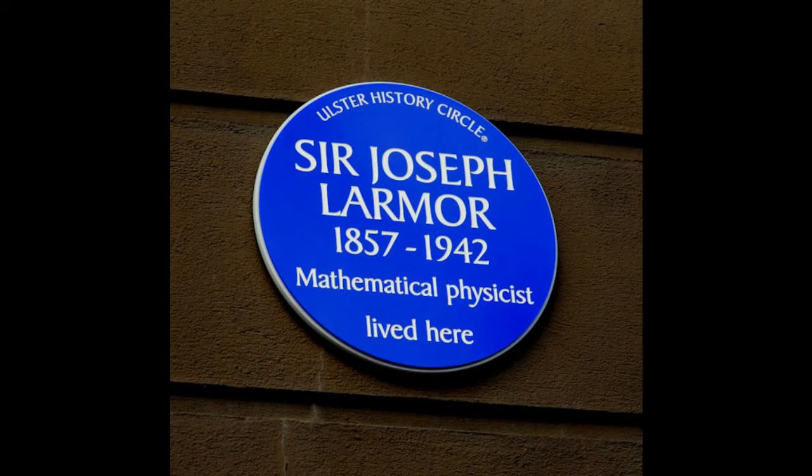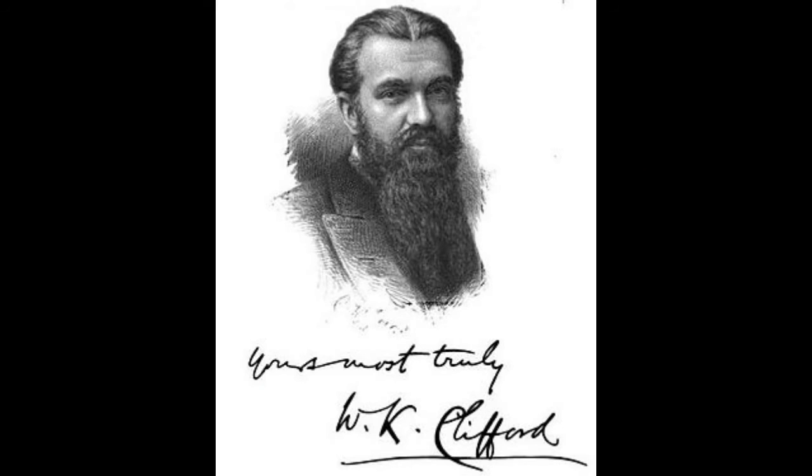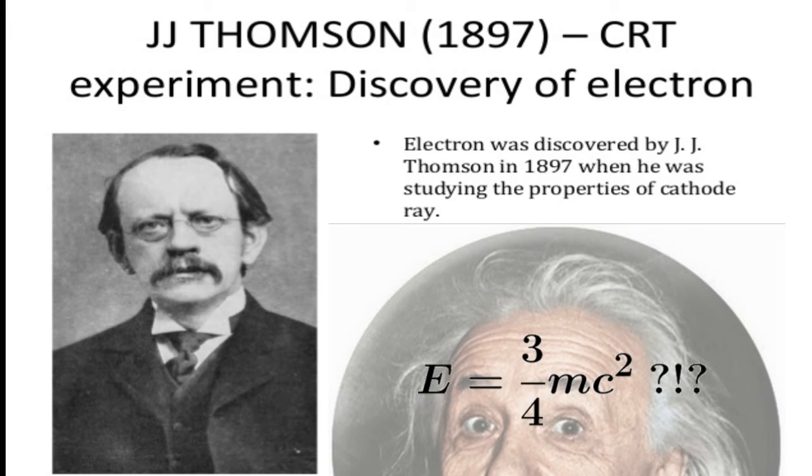Did Einstein invent the famous E equals MC squared? This has become synonymous with Einstein and has become synonymous with genius. It was the electrician J.J. Thomson in 1881 who produced a formula E equals three quarters MC squared.